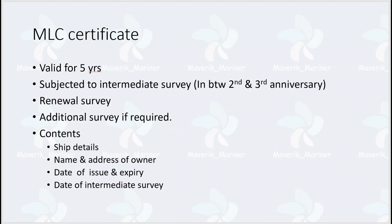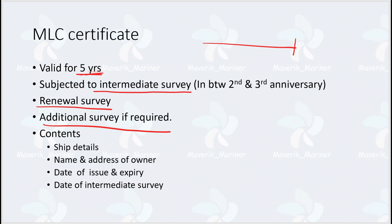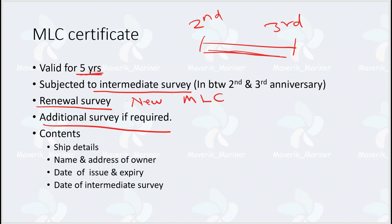The main MLC certificate is valid for five years. The certificate is subject to an intermediate survey, a renewal survey, and an additional survey if required. The intermediate survey is carried out between the second and third anniversary dates. The renewal survey is an extensive survey similar to the intermediate survey, but here a new MLC certificate is issued. An additional survey is required when there is a major change in MLC compliance procedures.